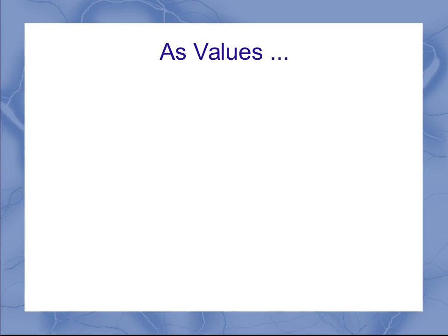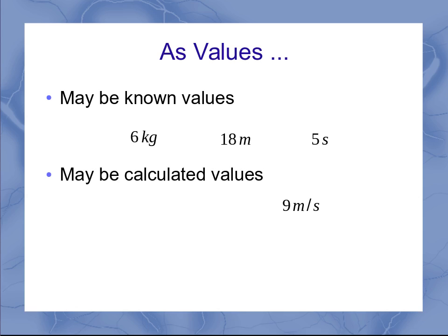Then we get into values. So sometimes you have known values. It might be six kilograms. It might be 18 meters or five seconds. And these are values that are known and given to you in a particular situation. Or it might be something that you're calculating, nine meters per second. In any case, you need to make sure you have both a number and a unit.